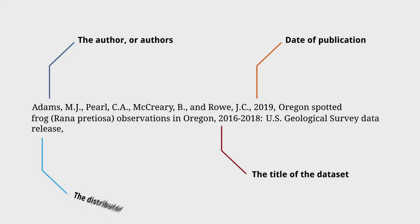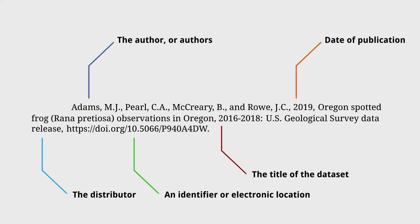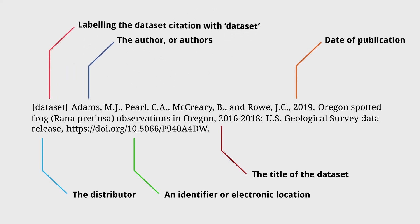The distributor — that is the organisation that makes the data set available by archiving, producing, publishing, or otherwise distributing it. An identifier or electronic location — whenever possible, this should be a unique and persistent global identifier, such as a DOI, that can be used to locate the data set. If the data set doesn't have a permanent identifier, you can use a web address and specify the date it was accessed. Labelling the data set citation with 'data set' also helps to record the citation properly in publications.